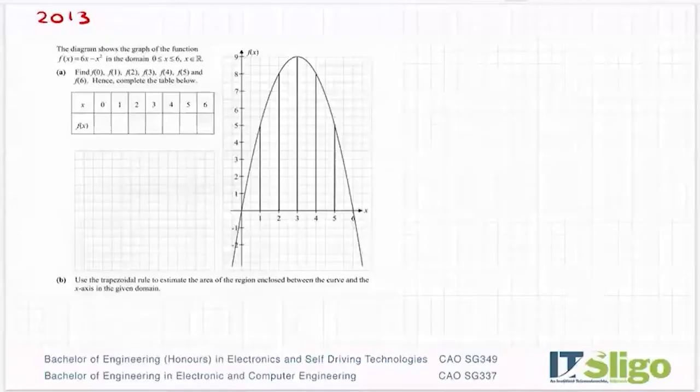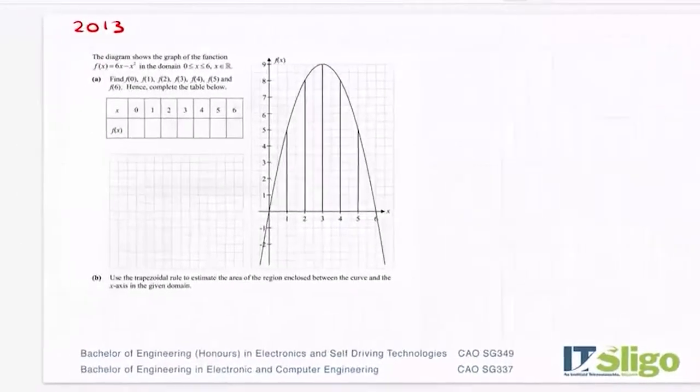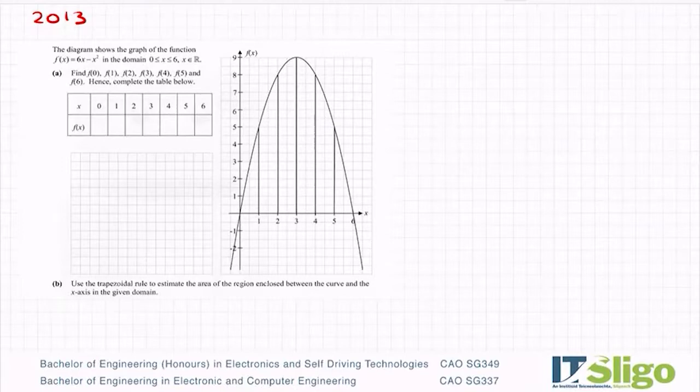Right, let's have a look at the 2013 question on functions. Well, functions and a mix of trapezoidal rule which comes under area. So part A, the diagram shows the graph of the function f of x equals 6x minus x squared in the domain 0 is less than or equal to x, less than or equal to 6, x is a real number. And then part A asks you to find f of 0, f of 1, f of 2, f of 3, 4, 5 and 6, hence complete the table below.